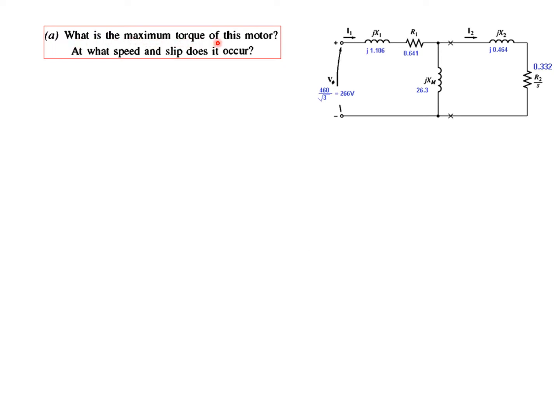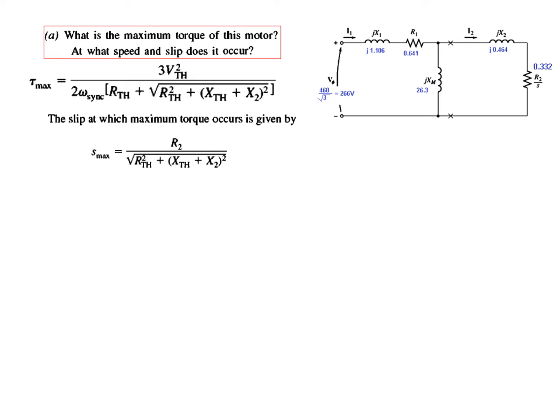For Part 1A, we need to find the maximum torque, the slip at maximum torque, and the rotor speed. The formulas for maximum torque, slip at maximum torque, and mechanical speed have already been derived. To solve all three, we need V_Thevenin, R_Thevenin, X_Thevenin, and Omega_sync. Let's find these one by one.